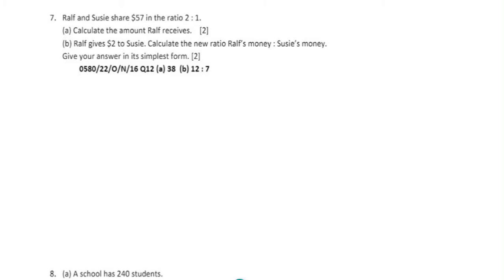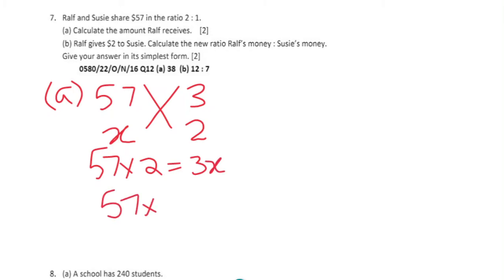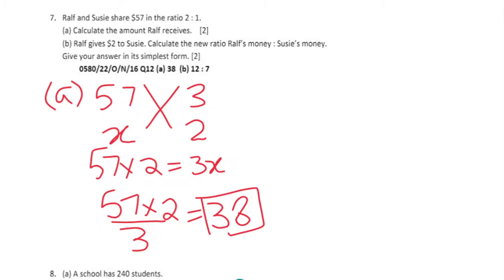Question 7: Ralph and Susie share $57 in the ratio 2:1. $57 represents 2 plus 1, which is 3 parts. To find Ralph's amount: cross multiply 57 times 2 equals 3x, so 57 times 2 divided by 3 gives us $38.